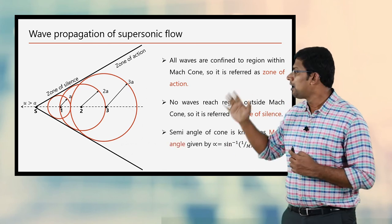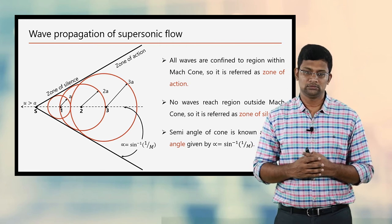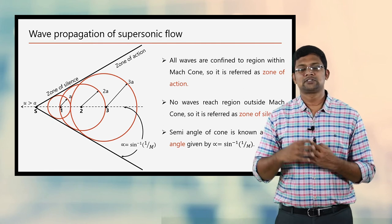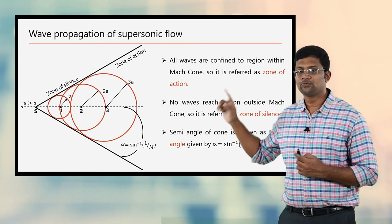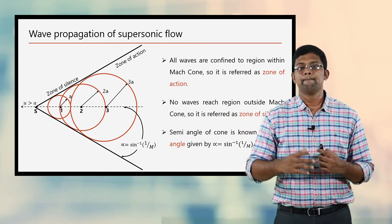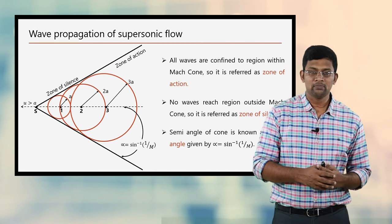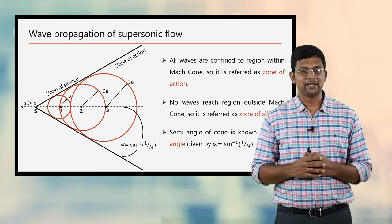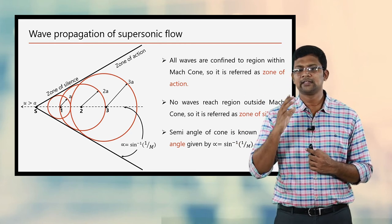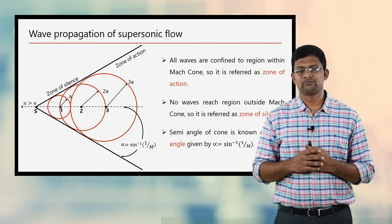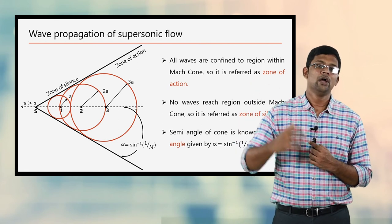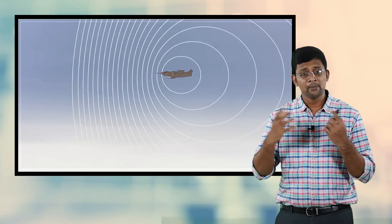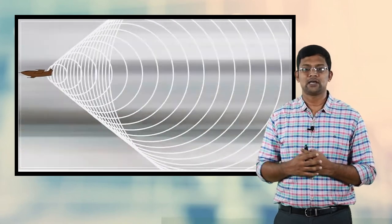Now I am going to define an important term: Mach angle. It is the semi-angle or half angle of the Mach cone, represented by the symbol alpha, and it is equal to sine inverse of 1 by M, where M stands for Mach number. This formula is highly important while solving problems. So, Mach angle alpha = sin⁻¹(1/M). Now I believe you can answer the question from the beginning of this video. For a passenger aircraft, since its velocity is less than the velocity of sound, the sound waves produced are always ahead of the aircraft. But for a supersonic flight, the velocity of the object overtakes the velocity of sound, and hence only after the flight has passed will the observer be able to hear that sound.